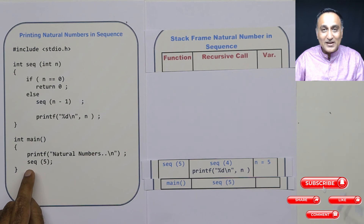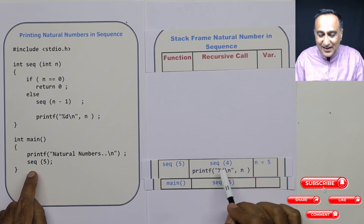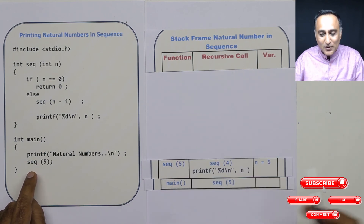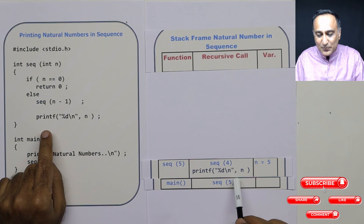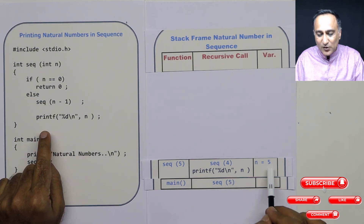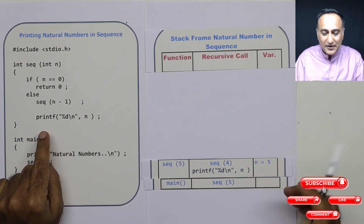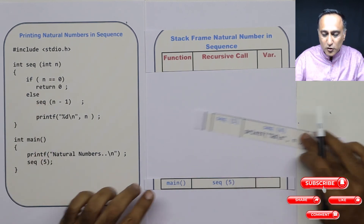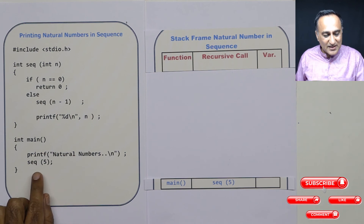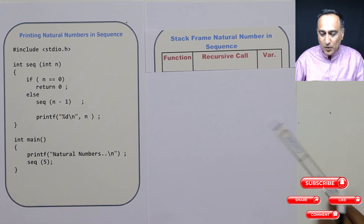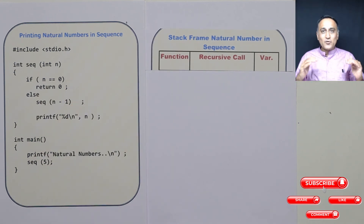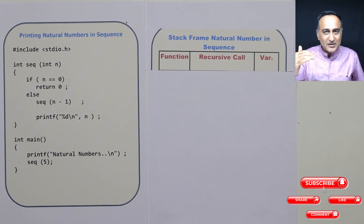And this automatically gets popped off. Sequence(4) was already popped out, so only this printf had to be executed. This printf got executed with n equal to 5, so 5 got printed. Once 5 was printed, this function execution also got over, so this also got popped out. Then automatically this also pops out and the control goes to the operating system. So this is the way I was able to show you how you can print numbers in a sequence using recursion.